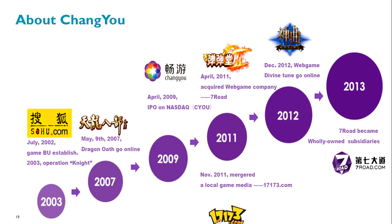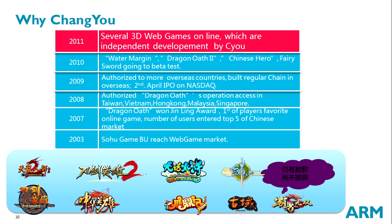Why Changyou? We have made many famous games: DragonOS, China Heroes, and others. DragonOS 2, Chinese Hero, and Ferris World went to beta test in 2010. All of these are very popular with Chinese users.